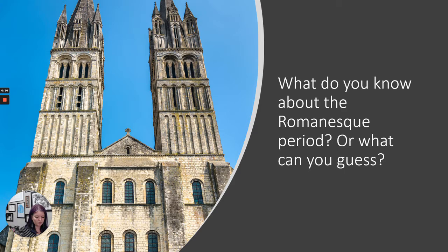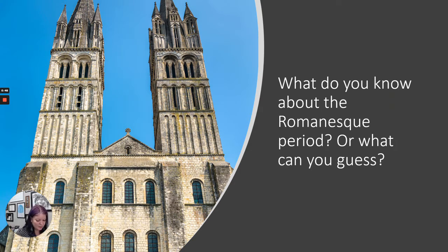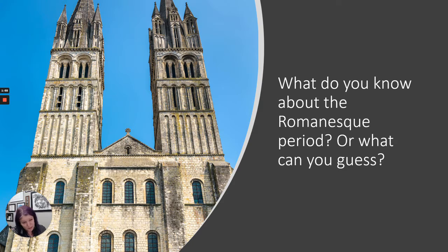Romanesque is art and architecture that appeared Roman-like. When you see '-esque' on the end of something, it just means 'like.' So it's Roman-like, which isn't exactly true, but we're going to talk about what is Roman-like about the Romanesque period. The label 'Romanesque' was first used in the 19th century to describe European architecture in the 11th and 12th centuries — a label that was retroactively applied, which is true for a lot of words in art history.